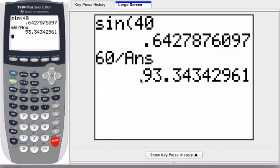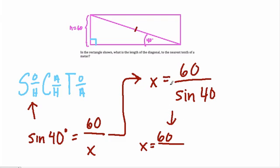Answer's the decimal we just got before, and there's the length of our hypotenuse, right? x is equal to 93.34342961, and let me just look at the problem again. We are rounding to the nearest tenth of a meter.